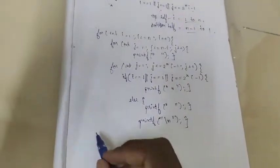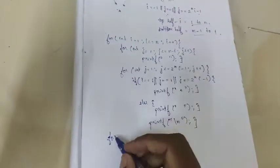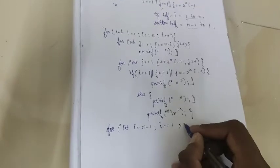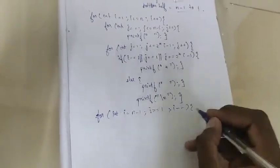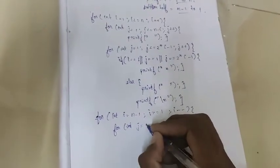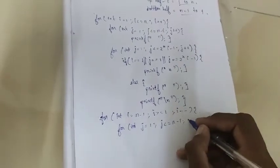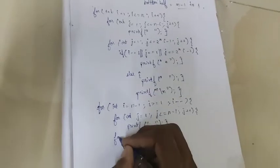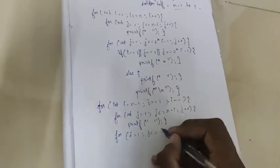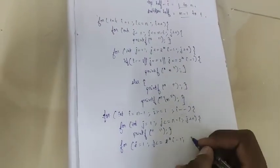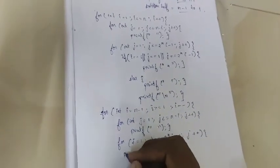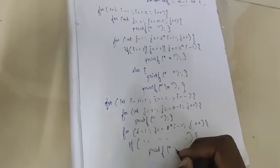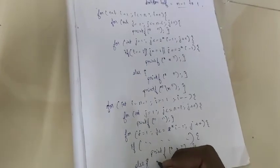And the reverse is achieved by just changing the outer for loop alone. For int i equal to n minus 1, i is greater than or equal to 1, i minus minus. For int j equal to 1, j less than or equal to n minus i, j plus plus — print space. Then for j equal to 1, j less than or equal to 2 star i minus 1, j plus plus — and the same if statement as shown: print star, else print a space.